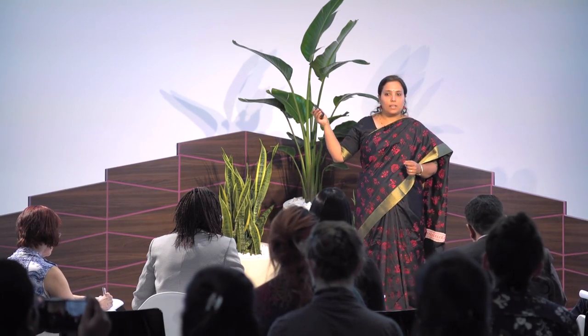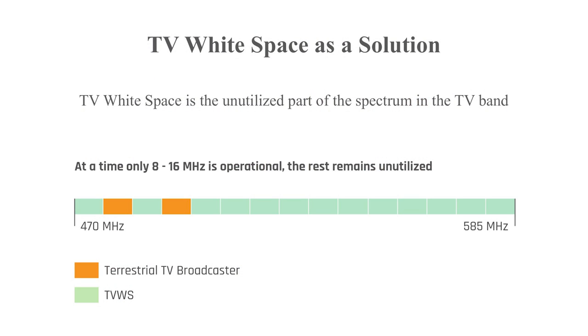Given a scenario where there is a tower, usually the towers are located very far away from villages — 16 to 20 miles away — and there are these villages that need to be connected. The possible solution we have worked on is TV white space. Why TV white space? Because TV white space is an unutilized part of the spectrum in the TV band.